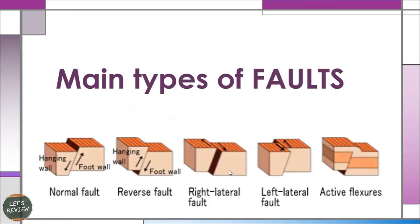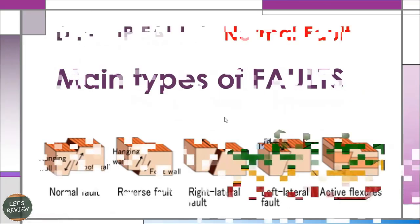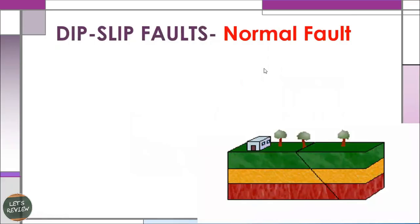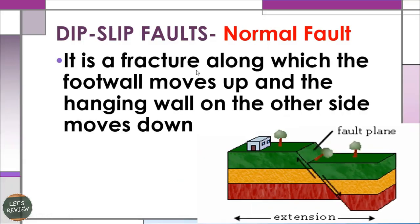The main types of faults include normal, reverse, and transform faults. The first is the dip-slip fault — specifically the normal fault. A normal fault is a fracture along which the foot wall moves up and the hanging wall on the other side moves down. It is due to tension forces, or the pulling apart of rocks, which moves the cracks vertically apart, taking up more space.